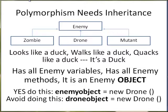Polymorphism needs inheritance. The only way you can have one variable that changes between types is if it is of the parent class type. Zombie inherits enemy's variables and methods — zombie is the child, enemy is the parent. Drone inherits enemy's variables and methods. Mutant inherits enemy's variables and methods.